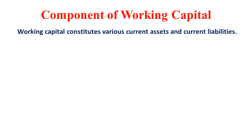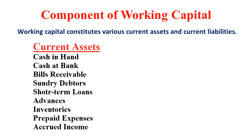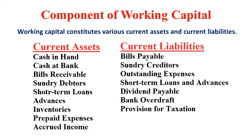The components of working capital are current assets and current liabilities. Examples of current assets include cash-in-hand, cash advances, bills receivable, sundry debtors, short-term loans and advances, inventories, prepaid expenses, and accrued or outstanding income. Current liabilities include bills payable, sundry creditors, outstanding expenses, short-term loans and advances received, dividend payable, bank overdraft, and provision for tax.